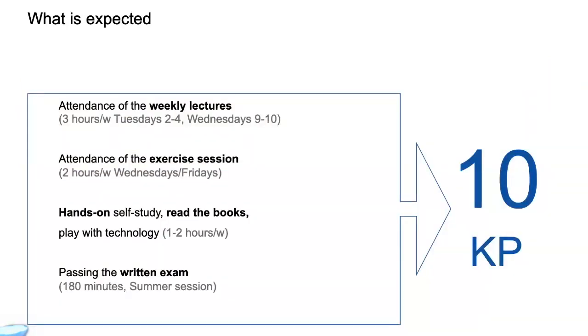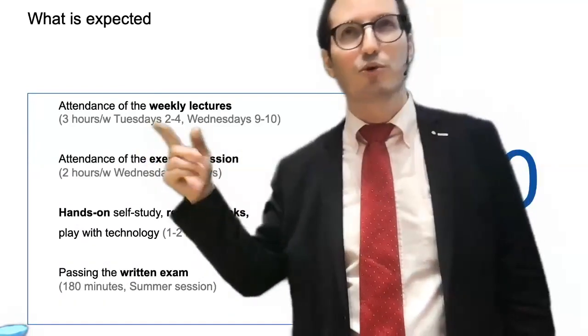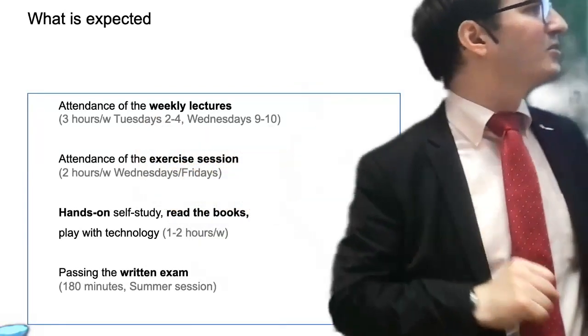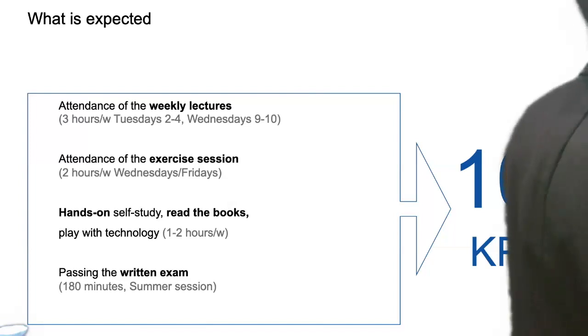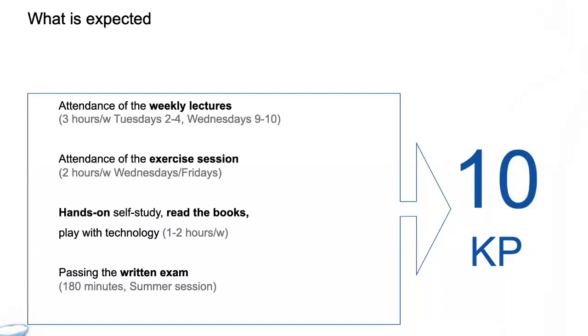So what's the deal? When there is an exam at the end, and of course you get your 10 credit points, if you pass the exam. But in order to prepare for the exam, you should attend the weekly lectures. It's not mandatory, of course, but it's highly recommended. So Tuesday from 2 to 4, Wednesday from 9 to 10. There's always more people on Zoom Wednesday. Why does it say summer session? No, it's a winter session. That's a mistake. I was drinking too much orange juice when I wrote that. That's the winter session, of course. January, February.